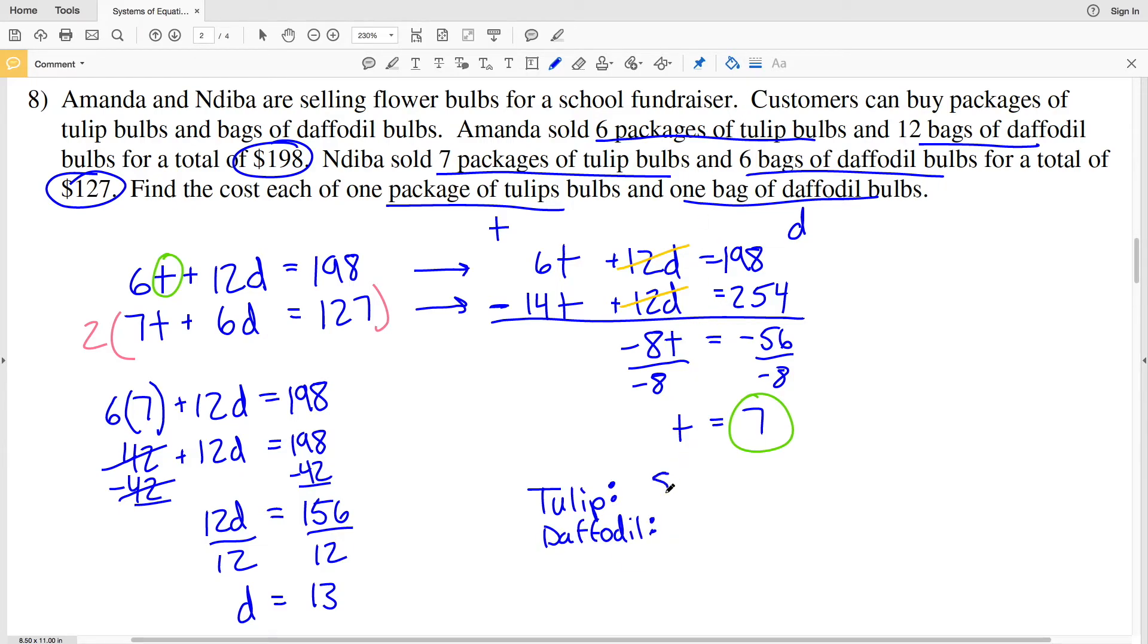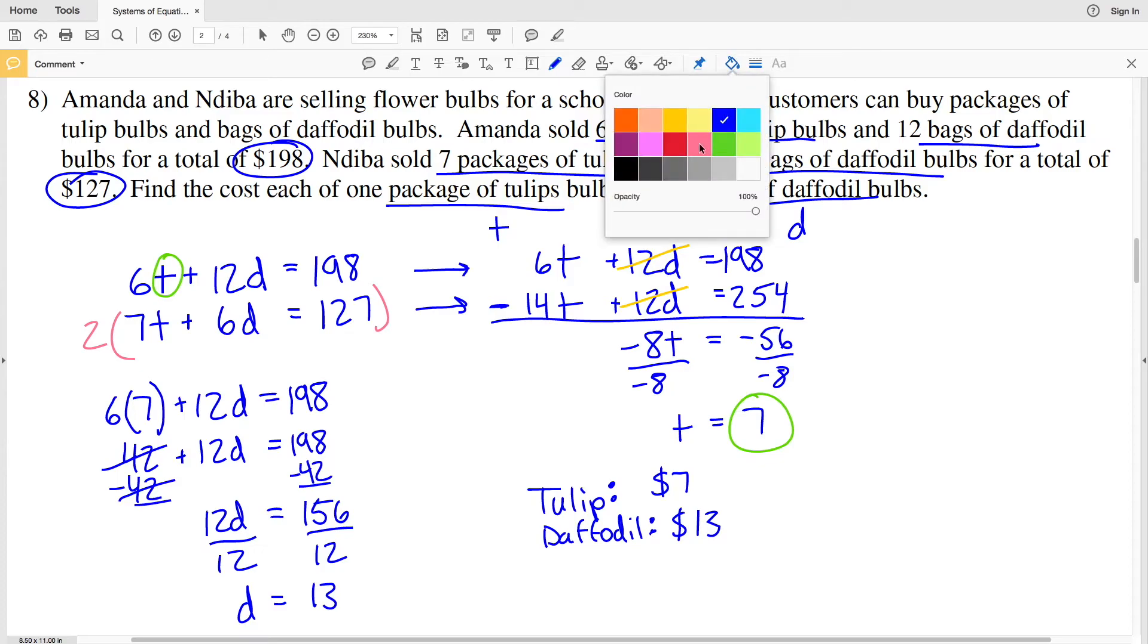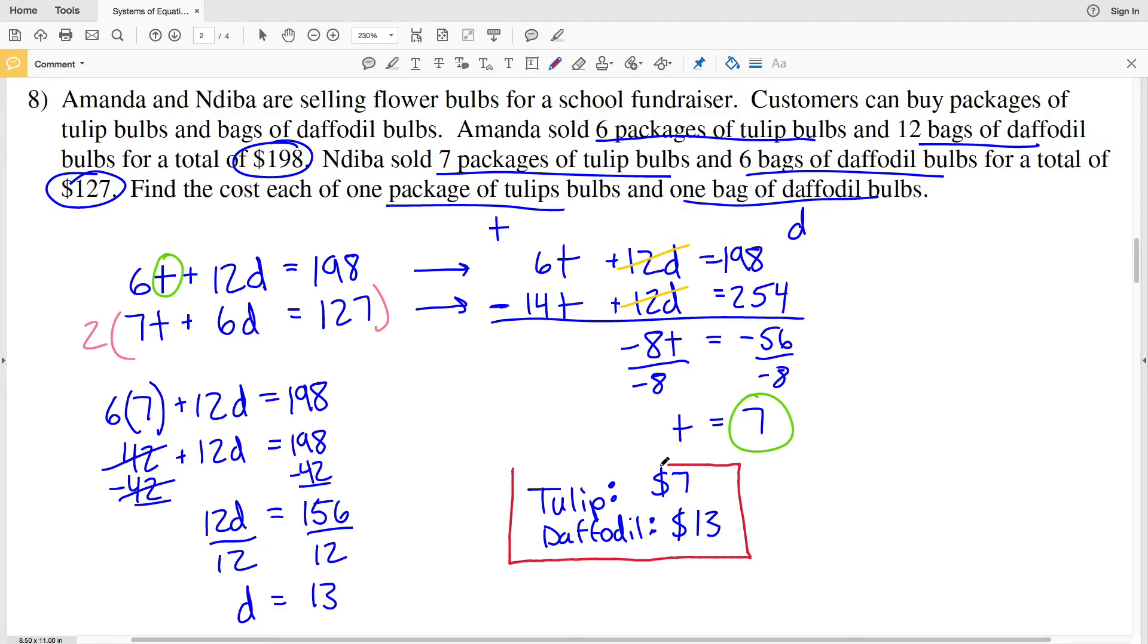Therefore, one package of tulip bulbs costs $7, and one bag of daffodil bulbs costs $13. So $7 and $13 is the cost of one package and the cost of one bag of tulip bulbs and daffodil bulbs, respectively. So $7 and $13 is my answer for number 8. Let's continue on to number 9.